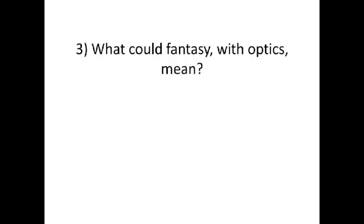In Parts 1 and 2, you have the idea of optics and the idea that it's a fantasy document - you may accept one, both, or reject both. But if you think it's possible that this is a fantasy document with optics in it, what would that mean? What are the implications of seeing both together? Who would do that, where would we find it, and why would it be done? I'd like to suggest a reason why that might be.